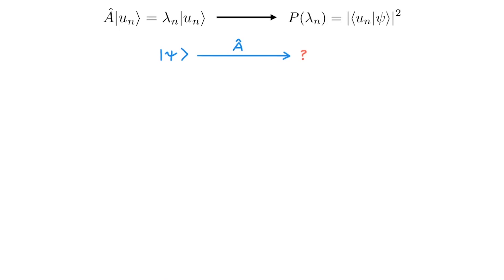Instead, what postulate 4 tells us precisely is the probability P of a given measurement outcome. To understand what this means, imagine that rather than having one system in state ψ, we have many exact copies of the system in state ψ — say, n copies.